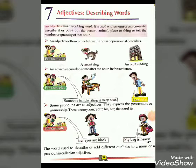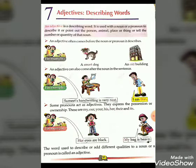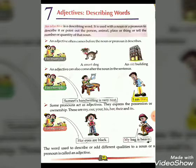An adjective can also come after the noun in the sentence. For example, 'Sumit's handwriting is very neat' — here 'neat' is the adjective. Next example: 'I am thin' — here 'thin' is the adjective.